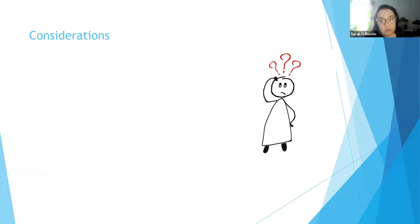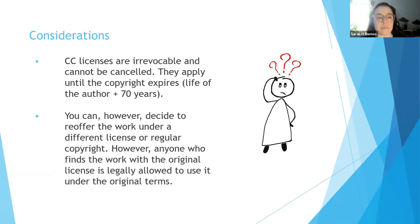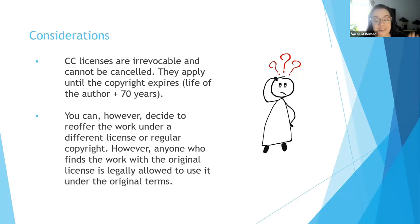It's very easy to apply a Creative Commons license to your work, but you are giving up some of your rights as a creator — never something to take lightly. Creative Commons licenses are irrevocable and cannot be canceled; they apply until the copyright expires — the life of the author plus 70 years. You can decide to re-offer the work under a different license or even with a regular copyright, because you still have all of those rights as the creator. However, anyone who finds the work with the original license is legally allowed to use it under the original terms — so the original license still stands on its own.